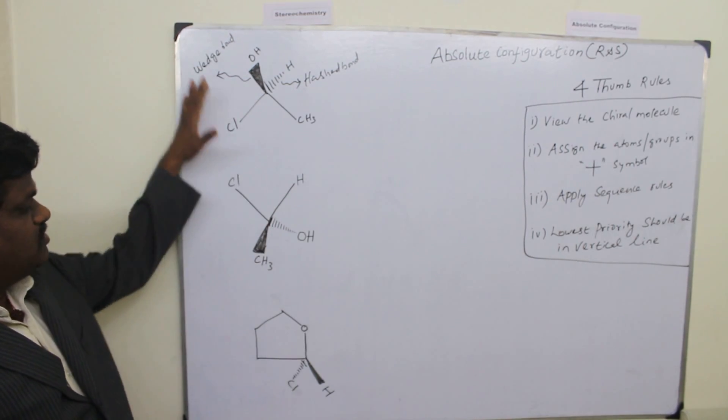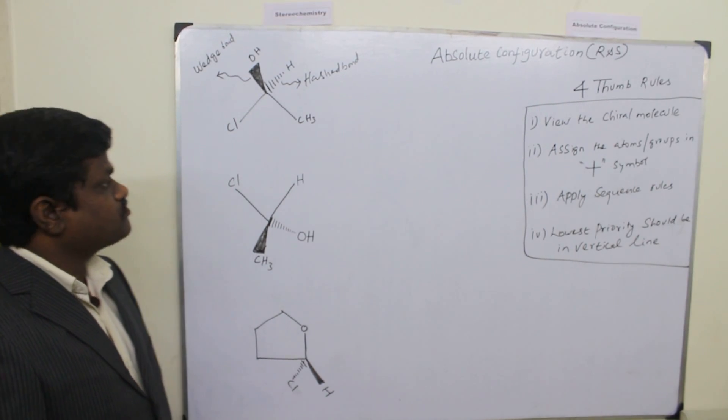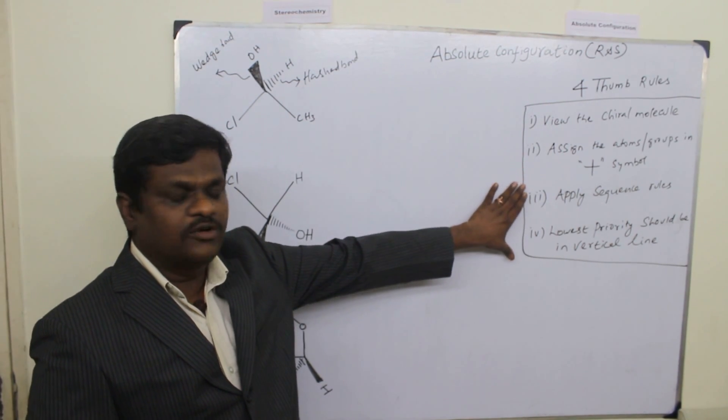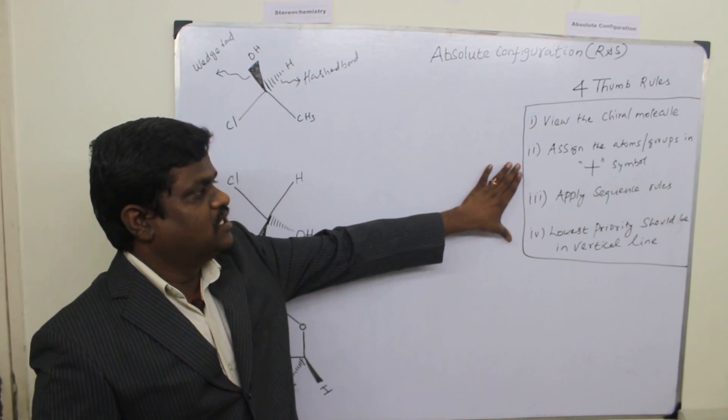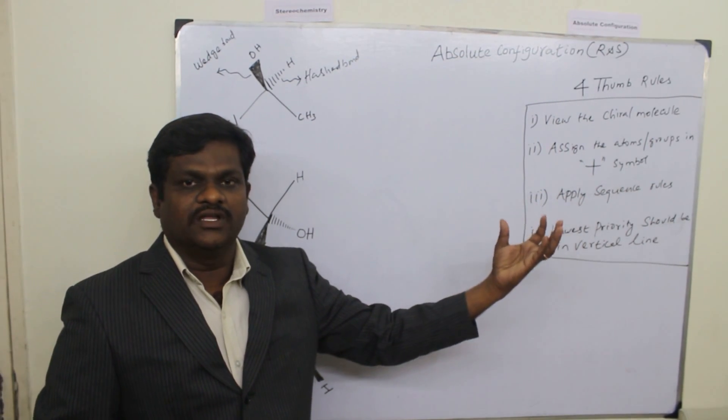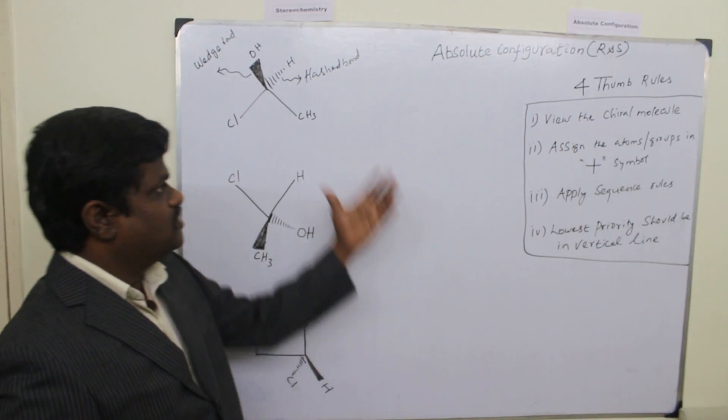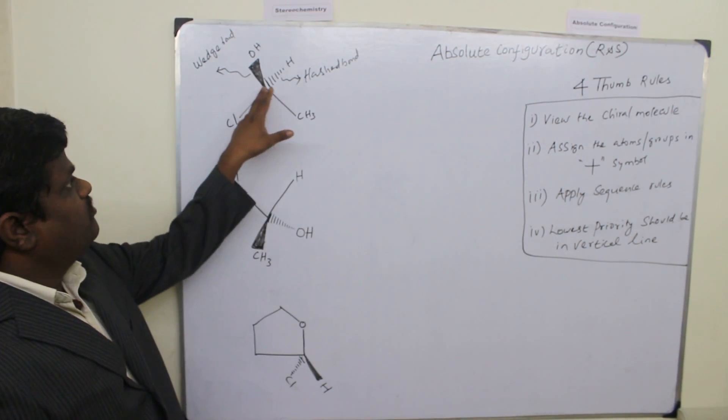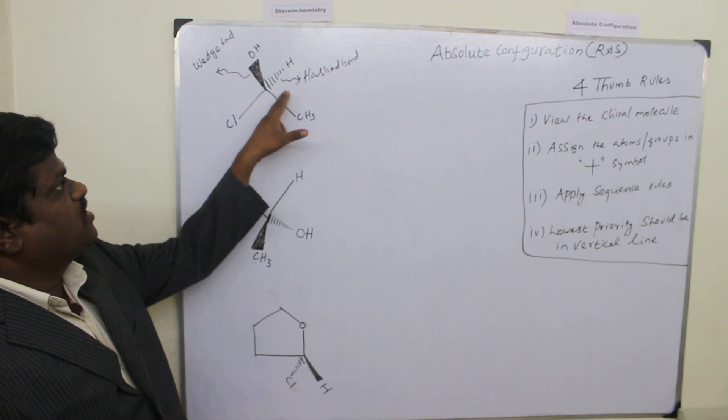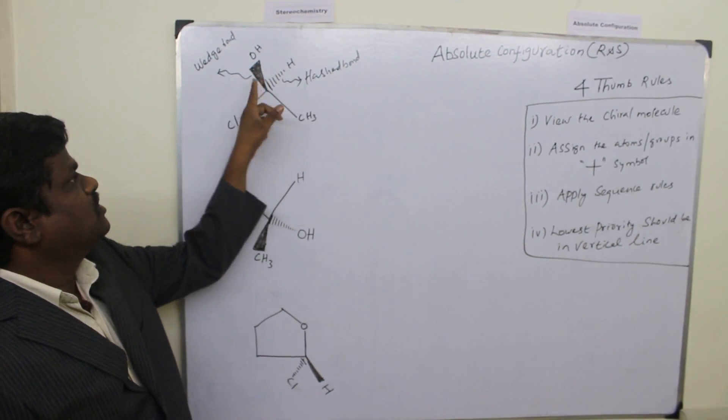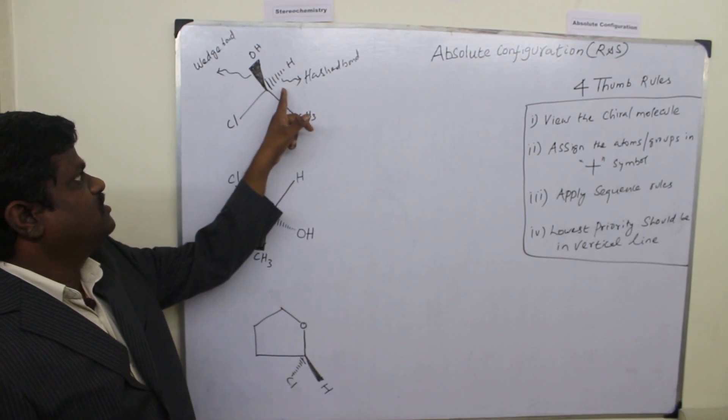For example, here are some structures we took. And please remember that these are the four thumb rules I developed. So the first thumb rule is how we are going to view the chiral molecule in two dimensions. Because these are in two dimensions. Please remember that we always represent the stereochemical structures by using the wedge bond and ash bond. The bold one is the wedge bond and the dotted, the dashed one is the ash bond.